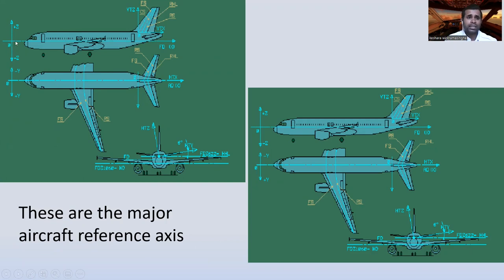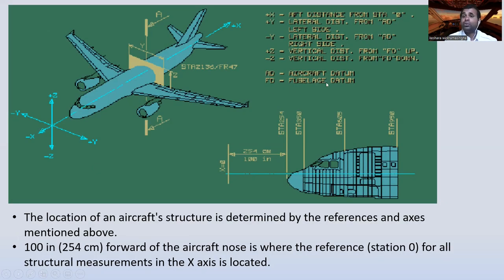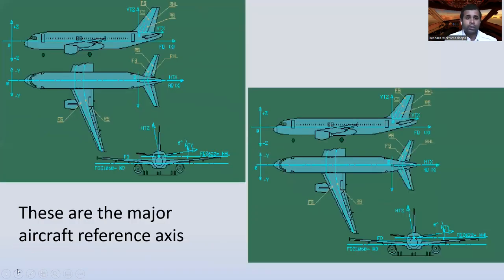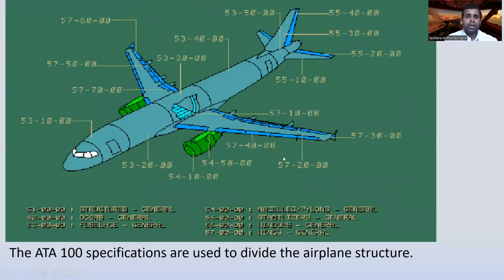The vertical axis here — FD means Fuselage Datum. So here is the fuselage datum axis. You can see the vertical stabilizer from the front view. The ATA 100 specifications are used to divide the airplane structure.